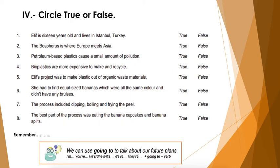For exercise number four, we have a true or false exercise. We're going to read each sentence and, based on the text, choose if it's true or false. And remember, we can use 'going to' to talk about our future plans.